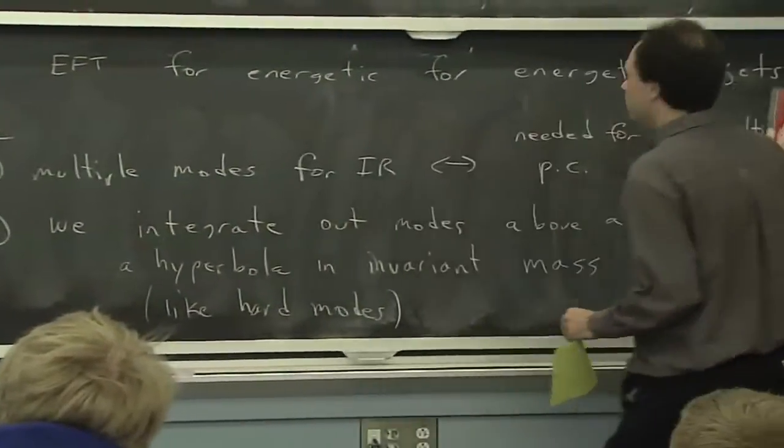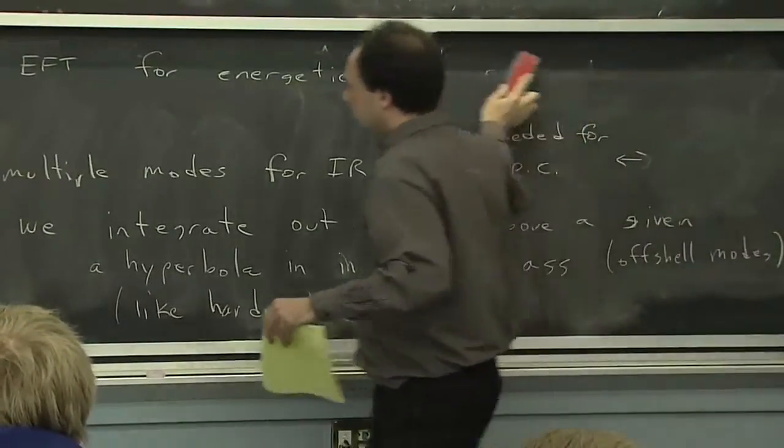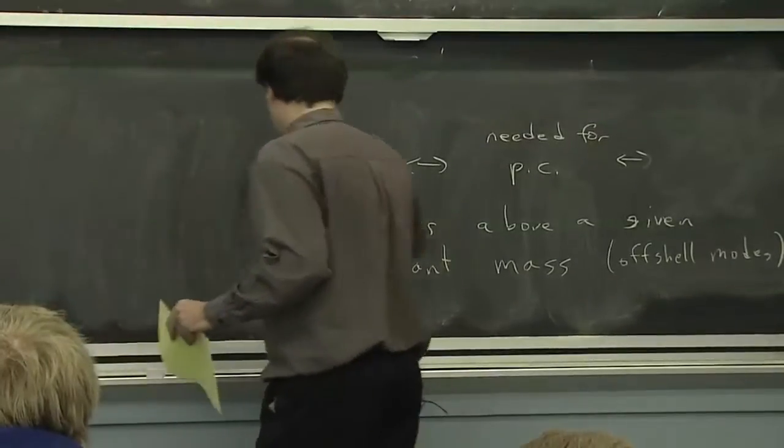OK. So when we did HQET, the first thing that we did is we started to expand. Before we designed the effective Lagrangian, we just said, well, what happens if I expand the full theory?